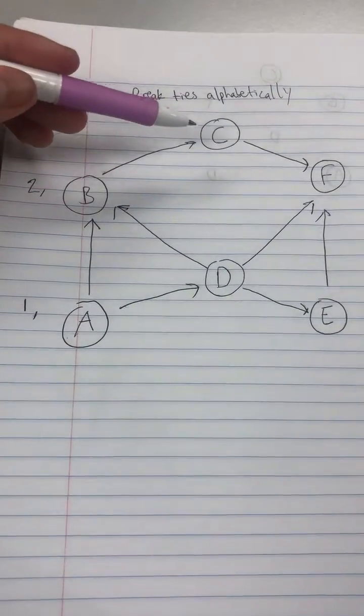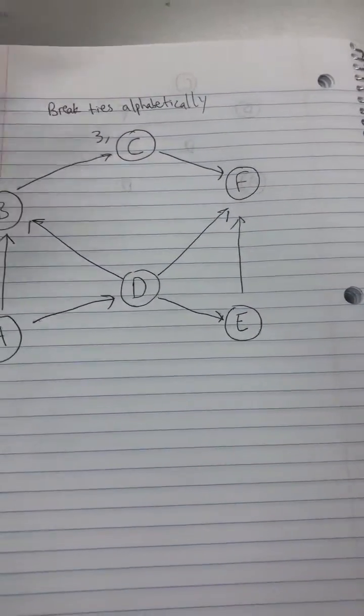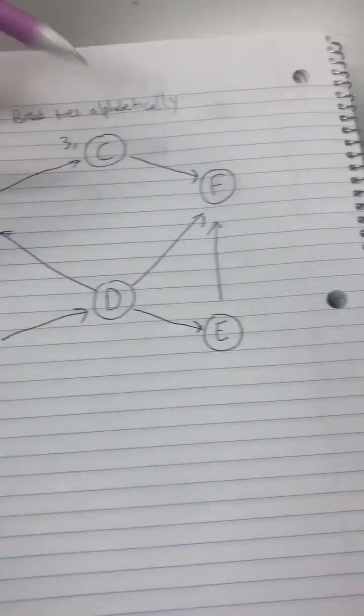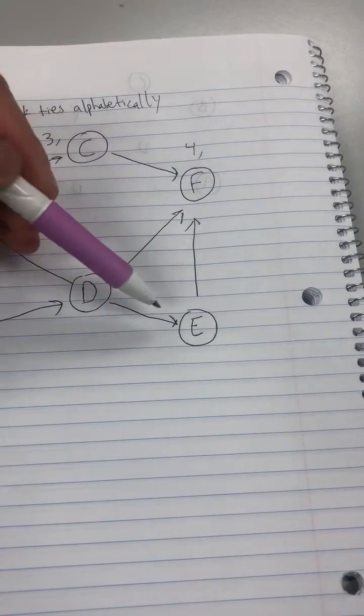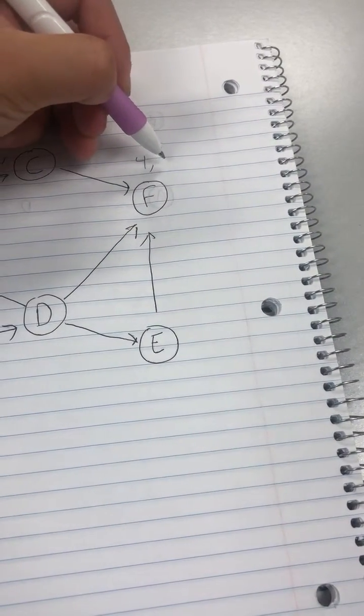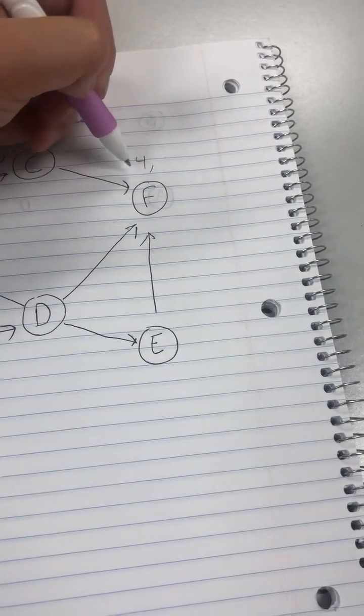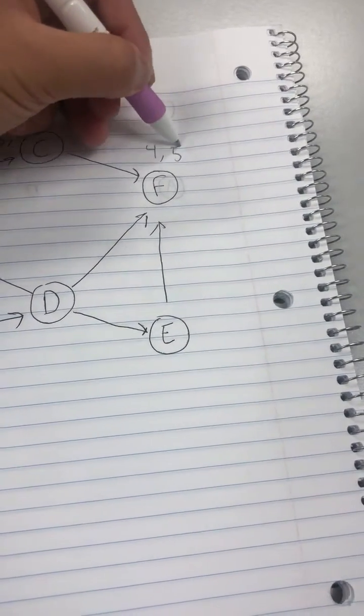Look at the children of B, only C. Put three comma. Children of C is F. Four comma. Now that we see F has no children, nowhere to go, we're going to close this ordered pair. It's going to be the next number in order, which would be, since we ended at four, it'll be five.